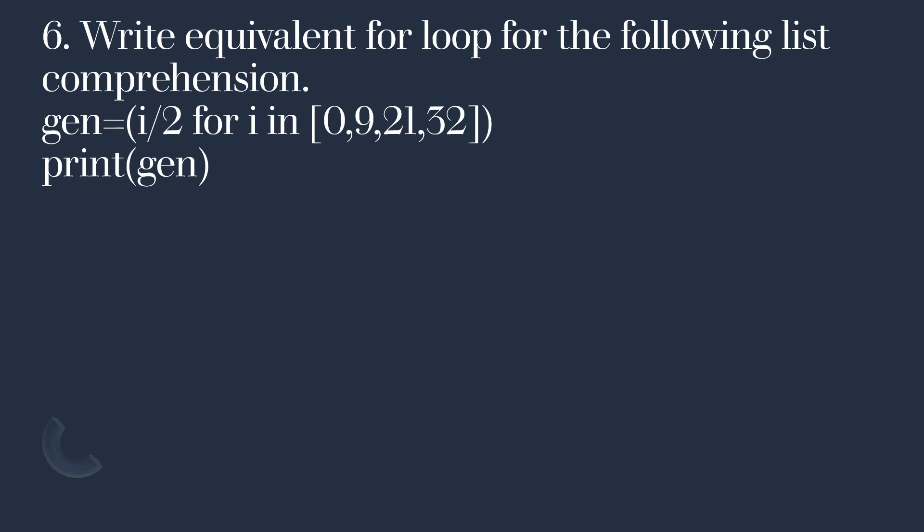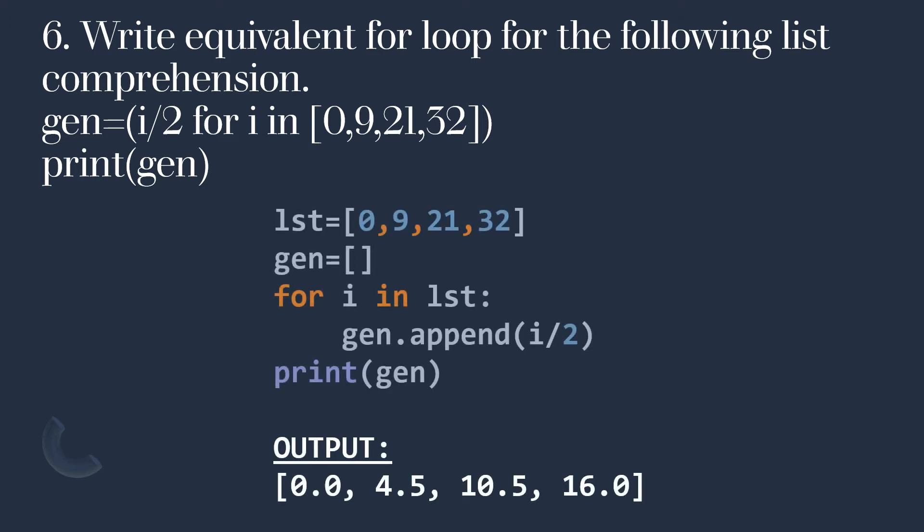Now write the equivalent for loop for the following list comprehension: gen = [i / 2 for i in [0, 9, 21, 32]]. There is a list LST having values 0, 9, 21, 32, and gen is one empty list. The for loop goes: for i in LST, gen.append(i / 2). Then print gen. Gen will contain all the values from LST divided by 2 — that is 0.0, 4.5, 10.5, and so on.